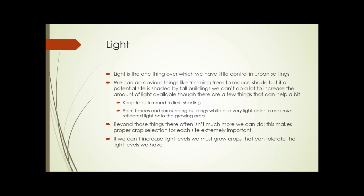This makes proper crop selection for each site extremely important. If we can't increase light levels, we need to grow crops that can tolerate the light levels we have. It's easy enough to look up particular crops and their required light levels, and plan your urban agriculture project around what will do well under the conditions you have. Most leaf crops — lettuces, arugula, spinach — can do fairly well, even very well, in quite low light. Other crops such as sweet corn need a lot of light and do not do well. Proper crop selection based on light and other conditions is extremely important, and that concludes the presentation for Unit 8.